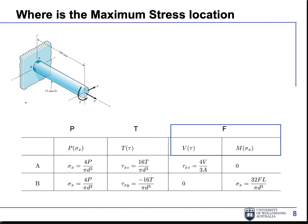This brings us to exam question one. You have point A and point B on the shaft, and the shaft has three loading conditions: P, F, and T. P causes normal tension — for any point on the shaft it will be the same normal stress, so both A and B have σ_x equal to 4P over π·D². X is along the shaft direction. For torsion T, since both A and B are on the external surface, they have the same magnitude of shear stress. For point A, the torsion goes in the positive Z direction, so τ_xz is positive.